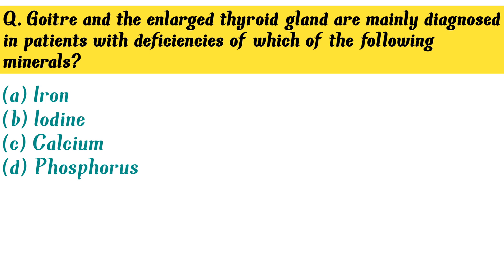Goiter and the enlarged thyroid gland are mainly diagnosed in patients with deficiencies of which of the following minerals? Option B. Iodine is the correct answer.